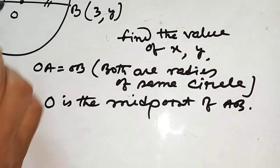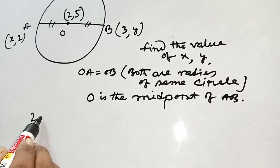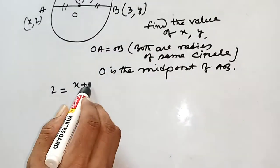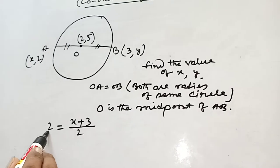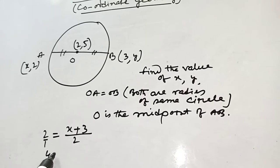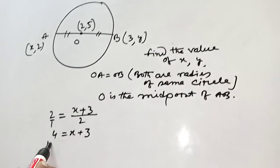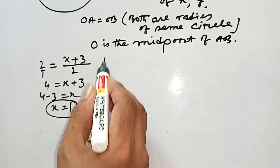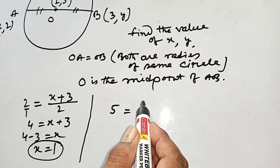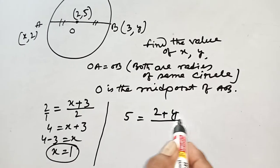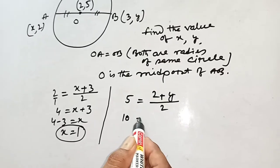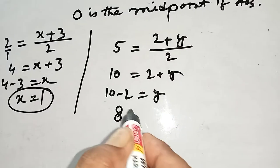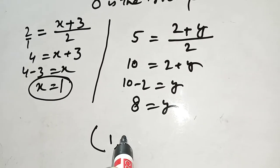The midpoint is given as (2, 5). That means 2 equals x1 plus x2 by 2. x1 means x, plus x2 means 3, divided by 2. Now first multiplication: 2 times 2 equals 4. 4 equals x plus 3. 4 minus 3 equals x, so x equals 1. Similarly, 5 equals y1 plus y2 by 2, that is 2 plus y divided by 2. 5 times 2 equals 10, so 10 equals 2 plus y. 10 minus 2 equals y, so y equals 8. That means the coordinate is (1, 8).